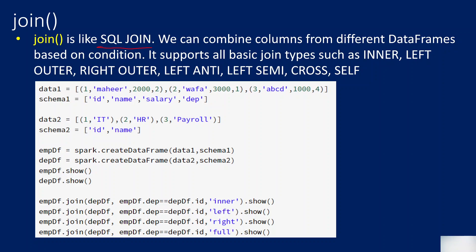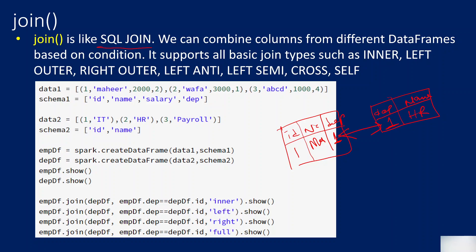Everyone who knows basics of SQL knows joins as well. Join will help you combine data from two different tables. Assume you have a table called Employee with employee ID, employee name, and department ID, and another table called Departments with department ID and department name. You can join these two tables based on the department ID column to get combined data from both.